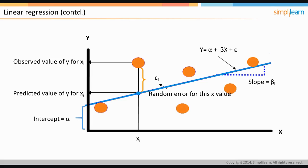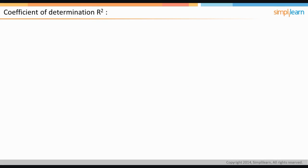In the next slide, we will look at the coefficient of determination for linear regression. The coefficient of determination, denoted by R squared, is a measure of goodness of fit.